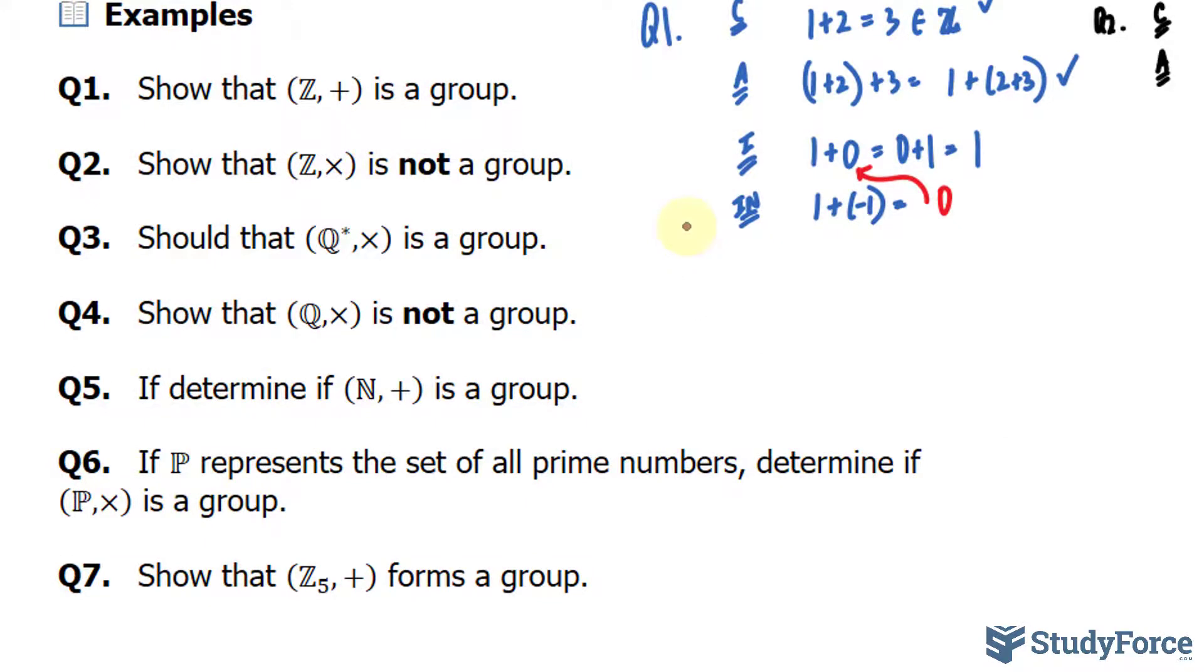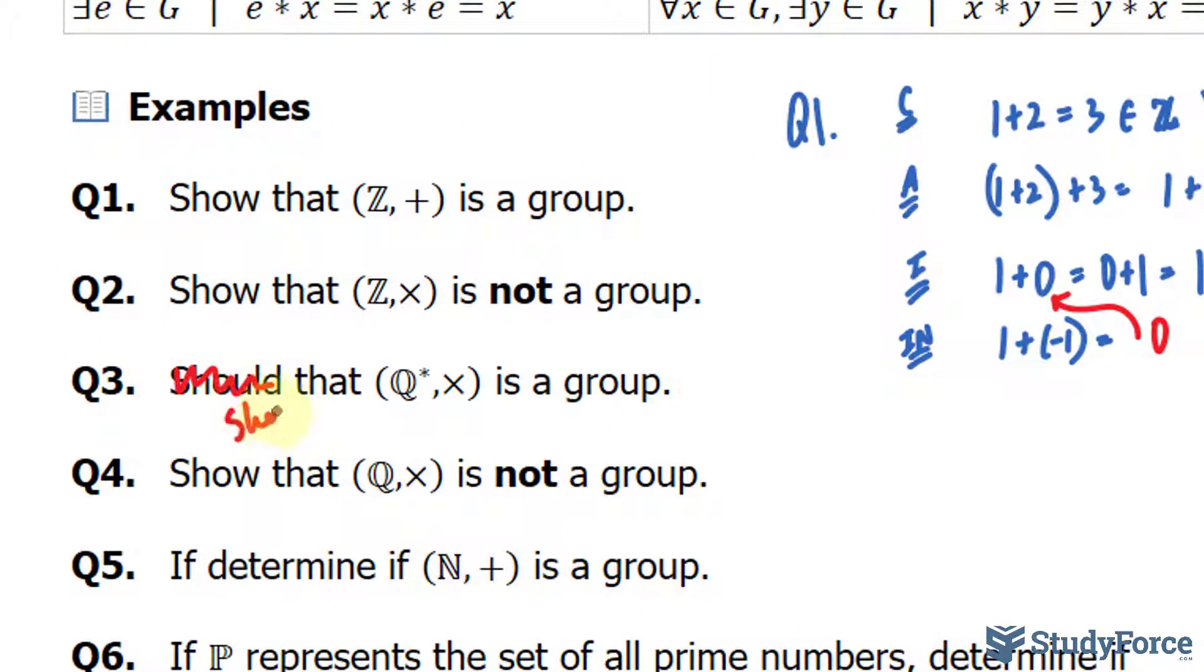Let's move on to question 3. This should be written show. Show that Q*, which is the set of all rational numbers, and this superscript asterisk suggests that within this set, only include non-zero elements, so exclude 0 from that set, with the operation multiplication is a group.